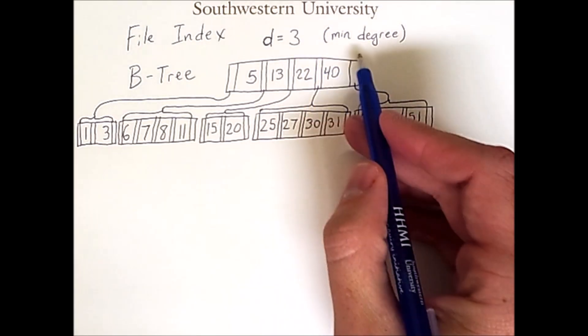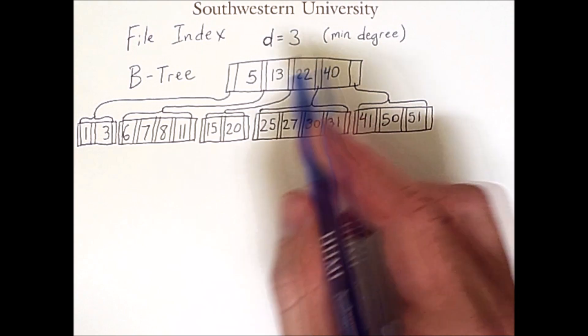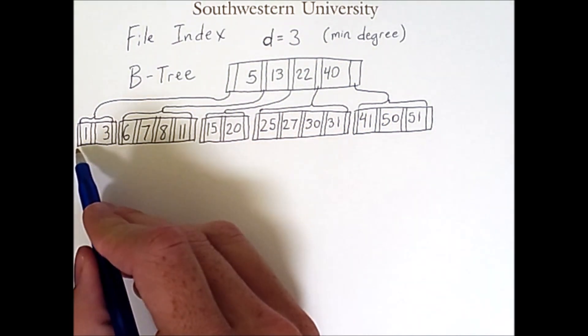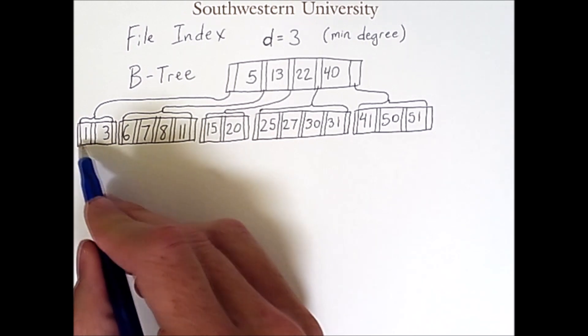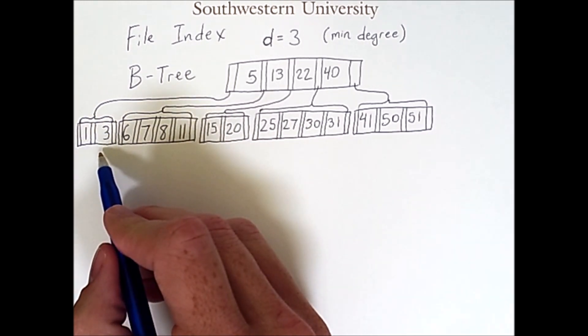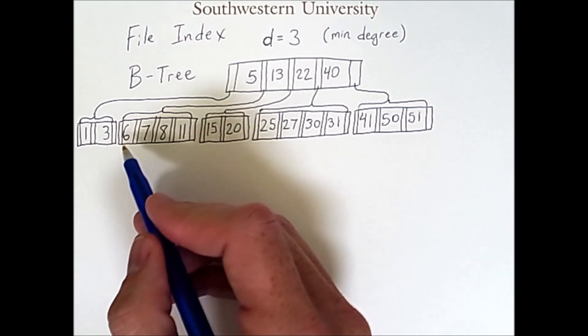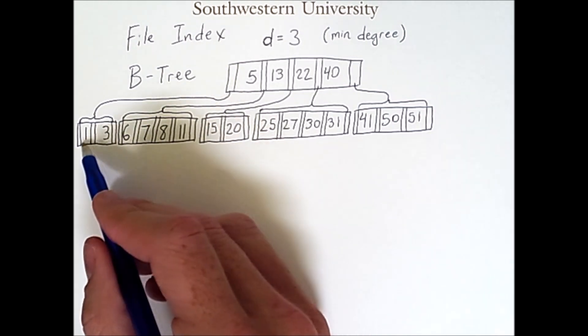This minimum degree of three means that every single node has at least three pointers. So this node here is as small as it can possibly be because it has one, two, three pointers. That also means that every node has at least two keys.